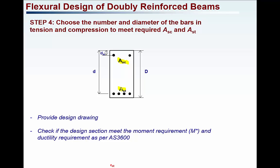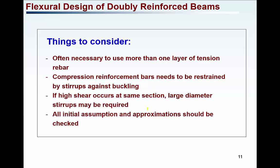A couple of things to consider for a doubly reinforced section: when you have quite a lot of reinforcement on the tension or compression side, it may be necessary to place the reinforcement in two layers, especially on the tension side. When using compression reinforcement, you will need to restrain it using stirrups — the role of stirrups is very critical in a doubly reinforced section, as there is a risk of buckling of the compression steel. Stirrups of adequate diameter must be provided. If high shear occurs at the same section, large diameter stirrups will be required. All initial assumptions and approximations should be checked: find the actual KU and actual MU values and ensure ductility and moment capacity requirements are satisfied.